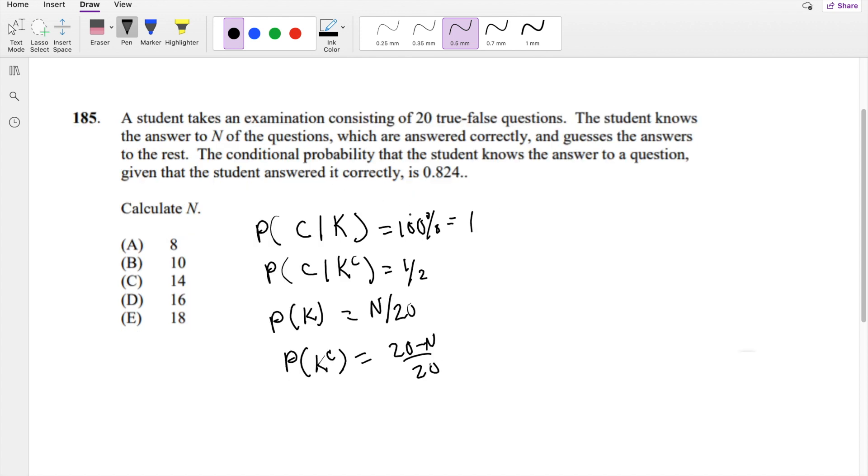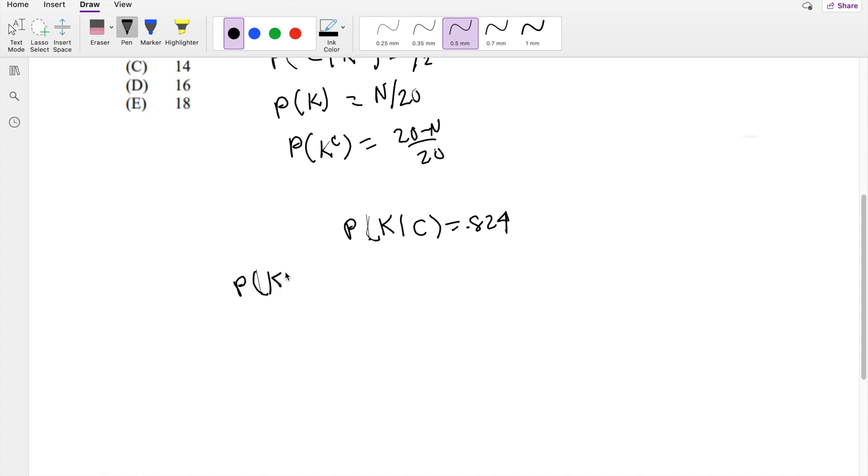And finally, they give you this. They tell you the conditional probability, the student knows the answer to the question, given that they answer correctly is 0.824. So this conditional probability could be broken down to P(K|C) equals P(K and C) divided by P(C). If you remember Bayes' theorem, that's great. If you don't, you can always easily derive it real quick.